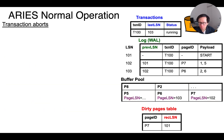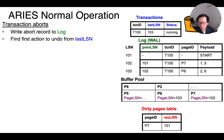If a transaction aborts, we first write the abort record to the log. Then we start to undo its actions by finding the last write that was performed by that transaction. This is conveniently stored in the last LSN field in the transactions table. We go to the corresponding entry in the log from last LSN and undo the update by looking at the old value stored in the payload.